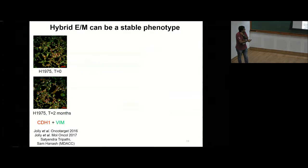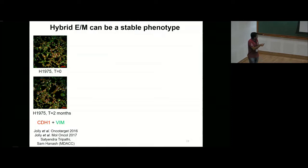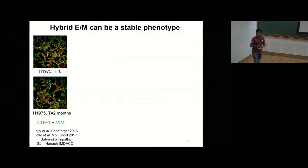We collaborated with a group at MD Anderson Cancer Center. These are non-small-cell lung cancer cells stained for an epithelial protein, E-cadherin (red), and a mesenchymal protein, vimentin (green). Single cells had both red and green proteins, suggesting they were in this hybrid state. To check whether this was a stable phenotype, we cultured that cell line over multiple passages, and after two months we saw the same behavior — most cells still stained for both red and green — suggesting that a hybrid phenotype can be stably maintained in this experimental model system.